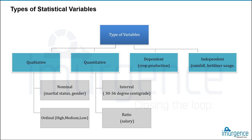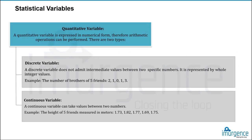For quantitative (numerical) variables, we have two scales: ratio scale and interval scale. An interval scale doesn't have an absolute zero — for example, zero degrees Celsius doesn't mean no temperature. A ratio scale involves a ratio of two things and does have an absolute zero. For quantitative variables, it's also important to distinguish discrete variables from continuous variables: anything counted is discrete, anything measured is continuous.